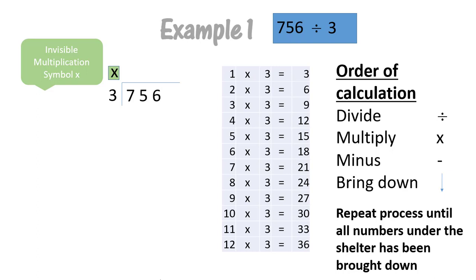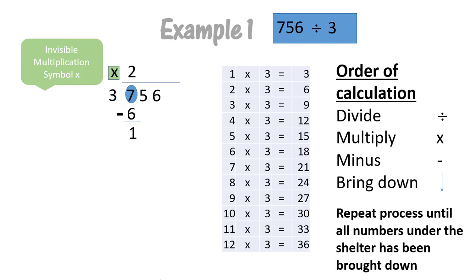We're going to say three goes into seven — how many times? Two times. We're going to multiply: two times three equals six. Seven minus six equals one. Then we start our process again to divide. How many times does three go into one? Three can't go into one because one is smaller than three.